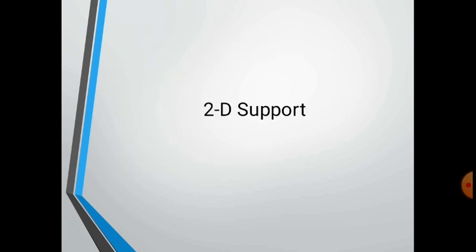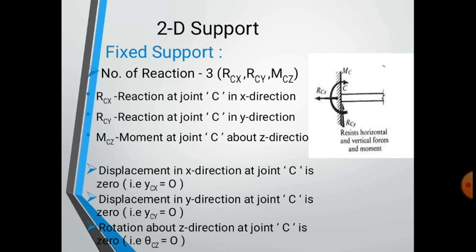In 2D, the fixed support has three reaction components: RC x in the x-direction, RC y in the y-direction, and MC z — the moment at joint C about the z-direction. The displacement in the x-direction is zero, the displacement in the y-direction is zero, and the rotation about the z-direction at joint C is also zero.